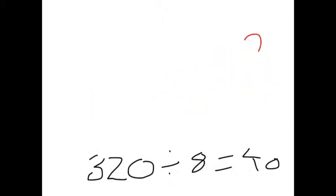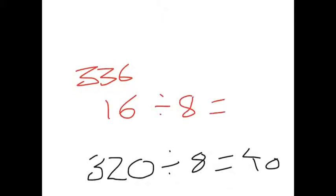Now what you do is you get the last 16, because there was 336 altogether and the difference between 336 and 320 was 16.